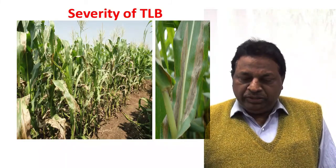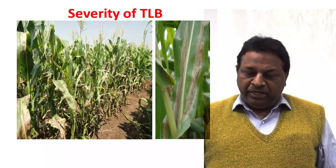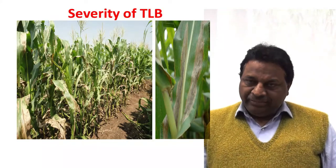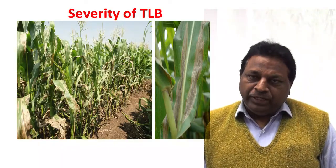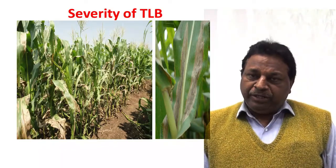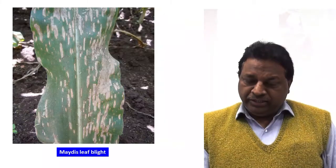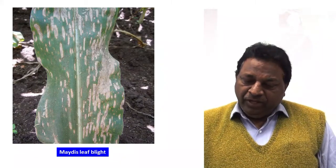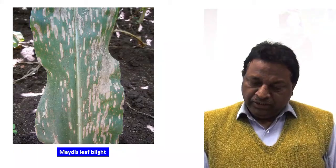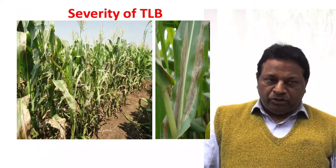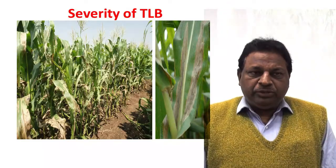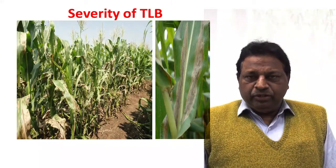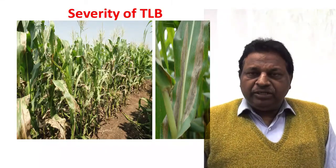Generally in Turcicum leaf blight, we see a long patch. When we see field conditions, Turcicum shows a large long patch, whereas Maydis leaf blight shows a smaller patch. This helps us to distinguish between the two diseases.